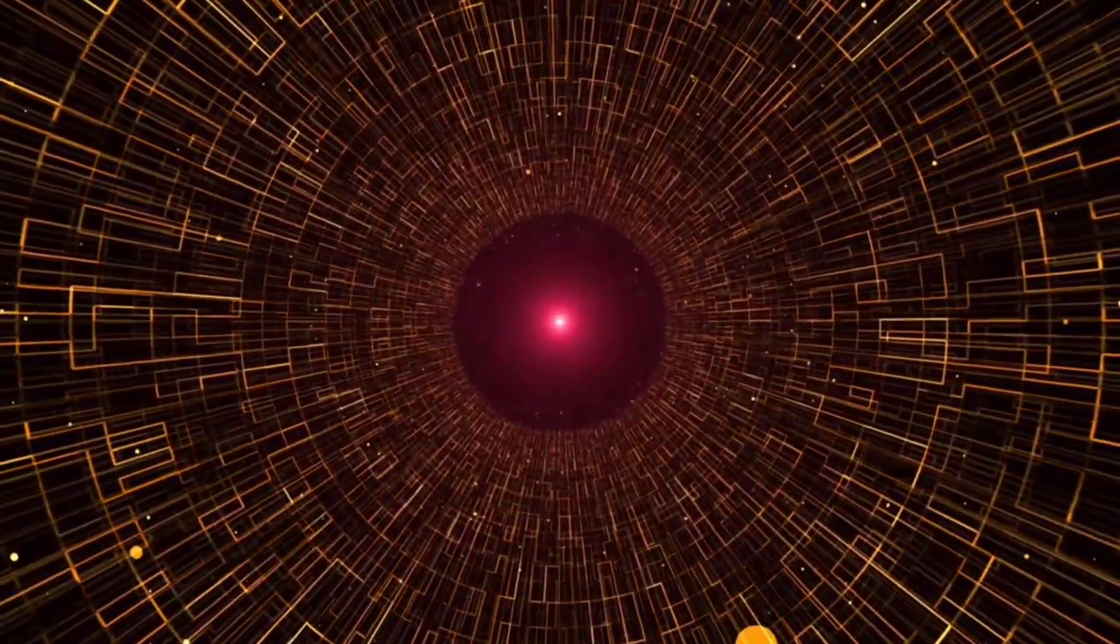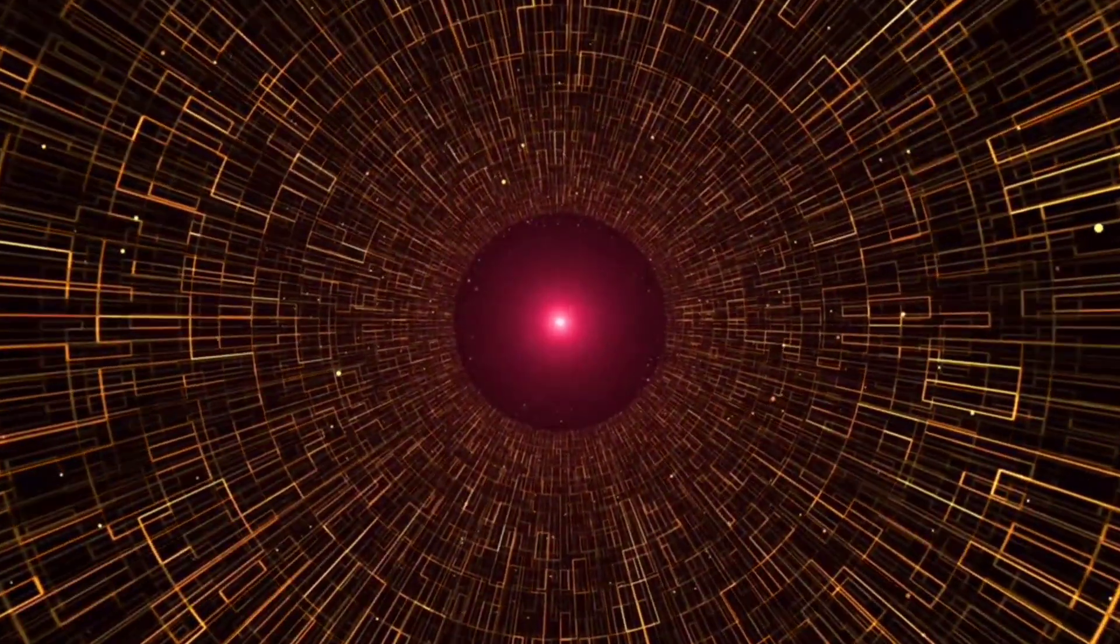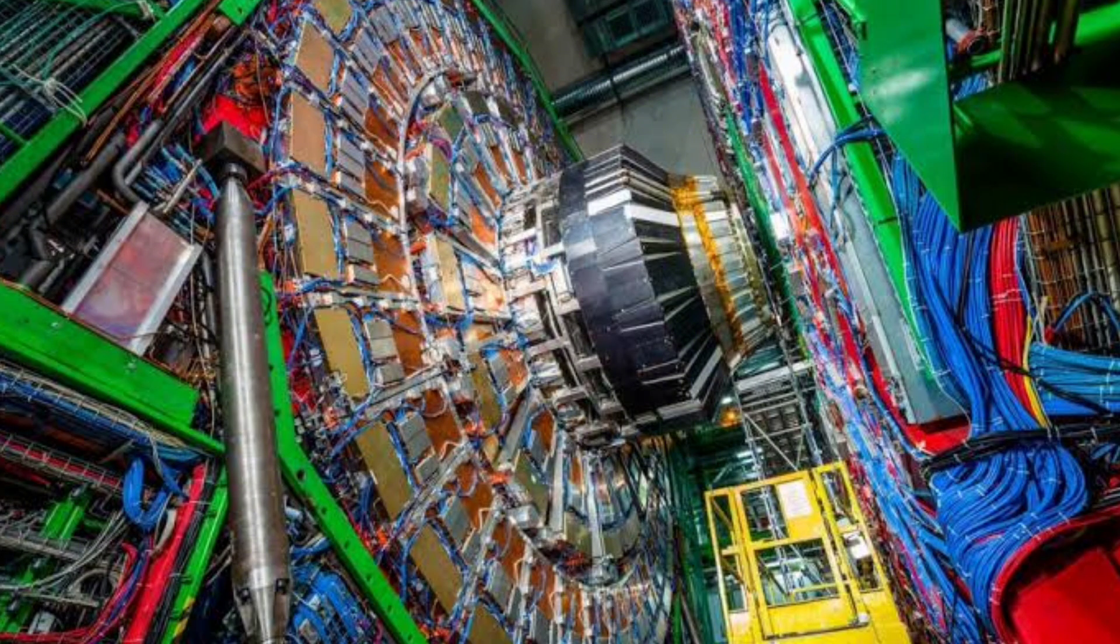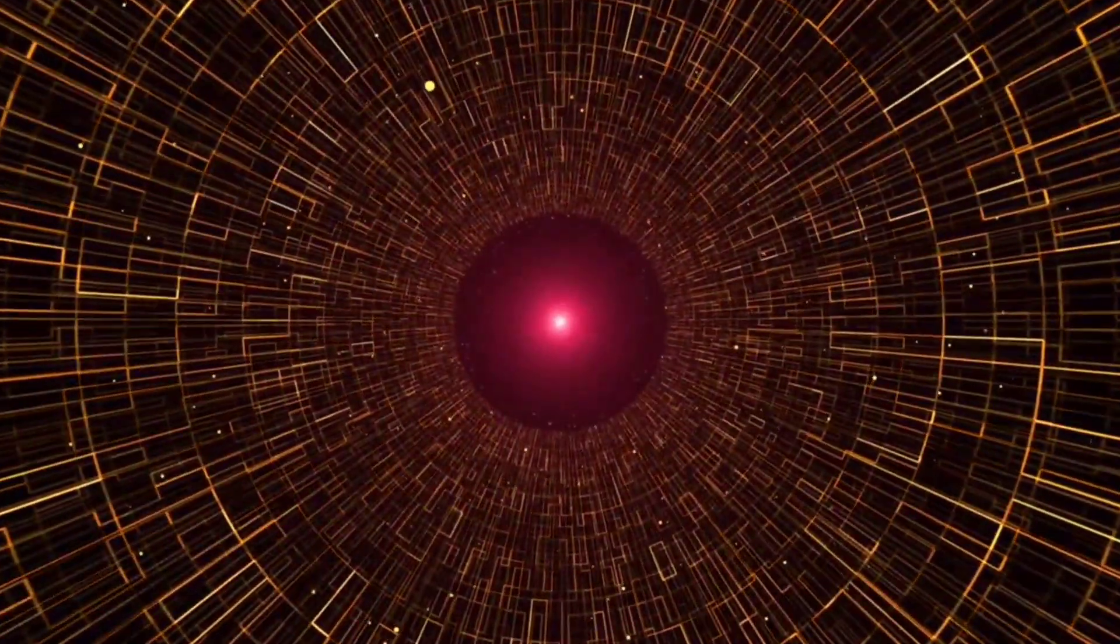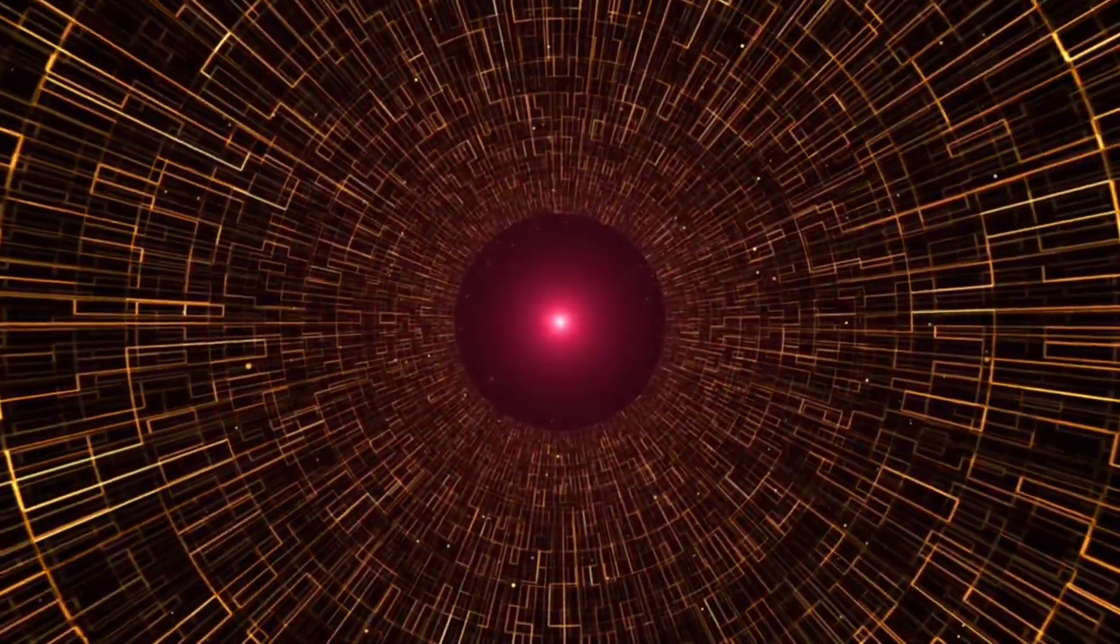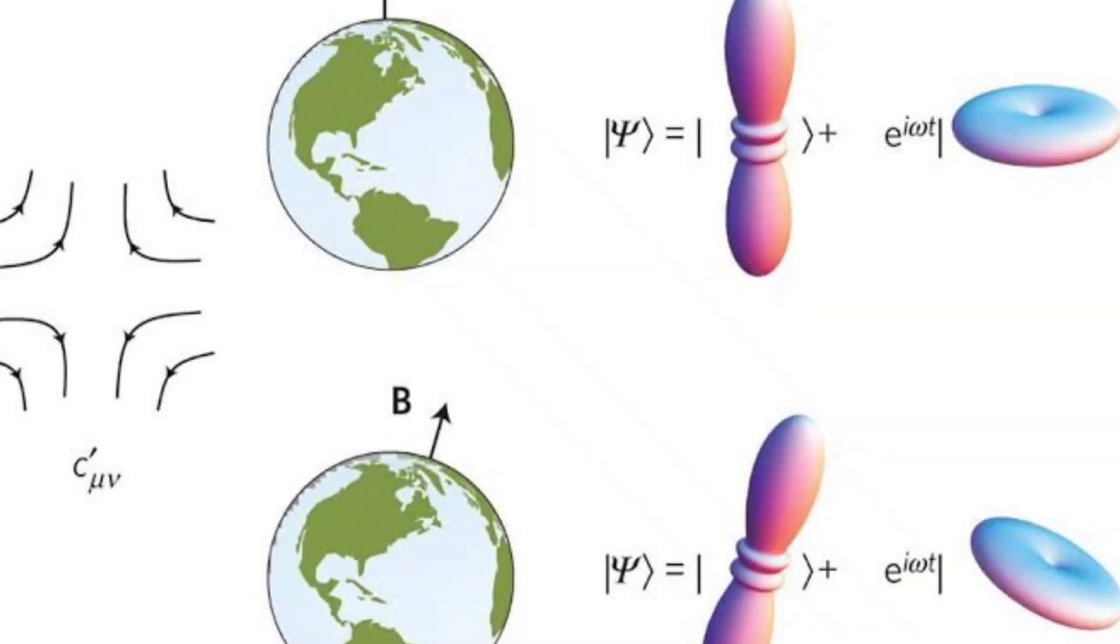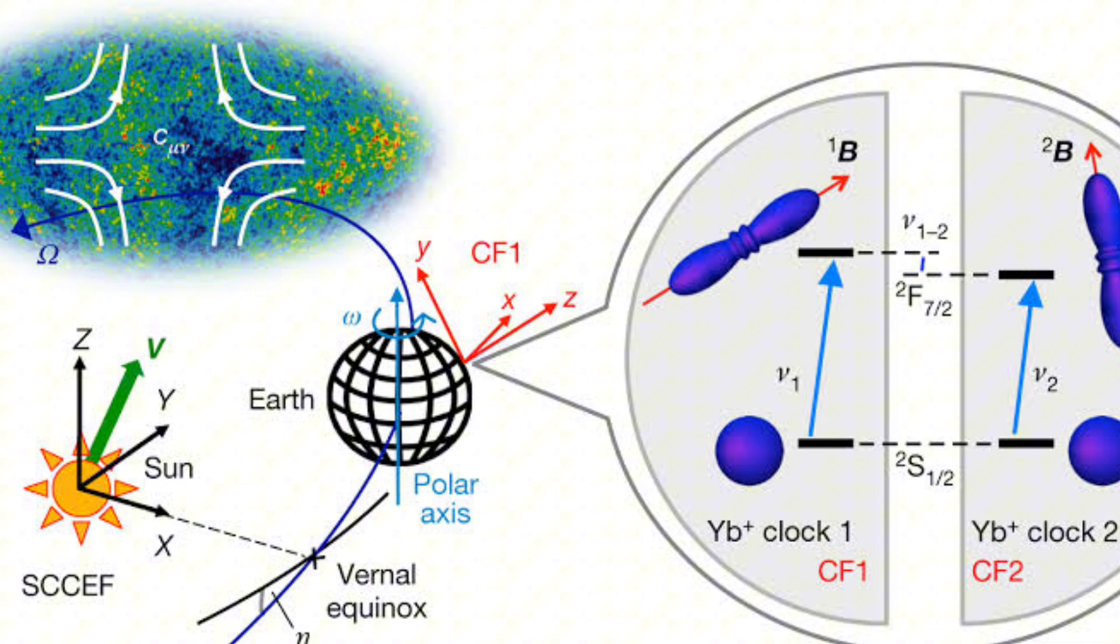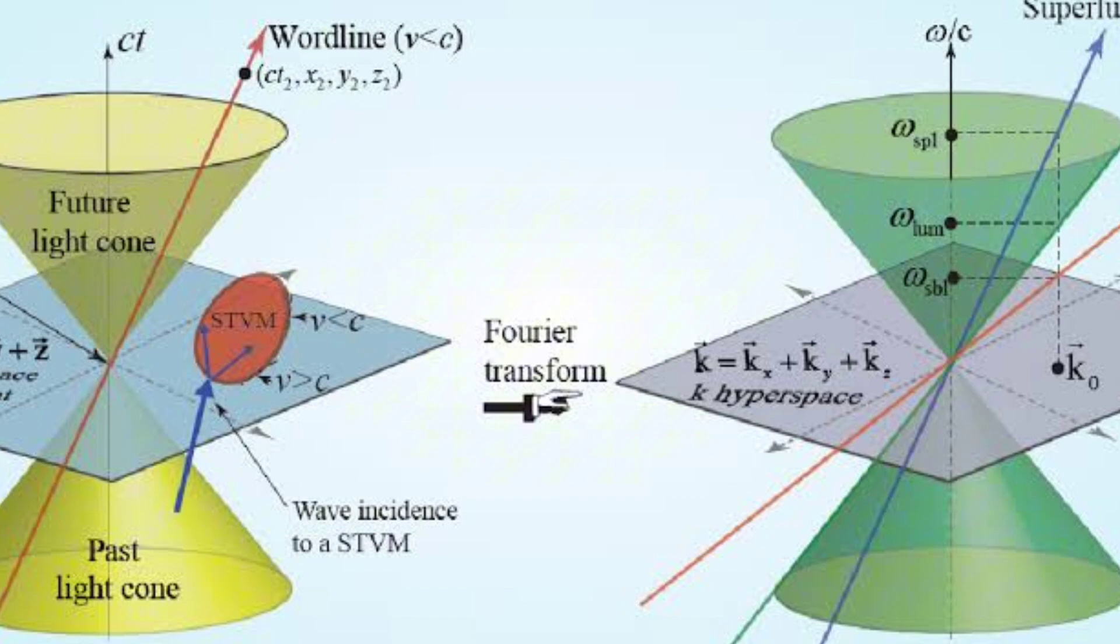After running the experiment, the researchers found no variation in the rate of top quark production. No matter what time of day it was, the results stayed consistent. That means there's no sign of a preferred direction in space-time, and Lorentz symmetry holds strong. This is huge because it reaffirms the validity of Einstein's special relativity. It also means that Lorentz symmetry is still intact, ruling out any new fundamental violations in space-time, at least for now.